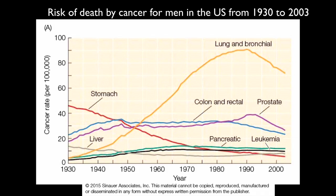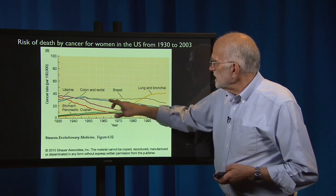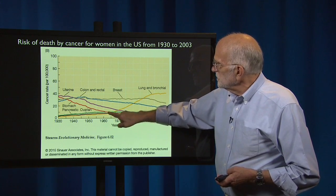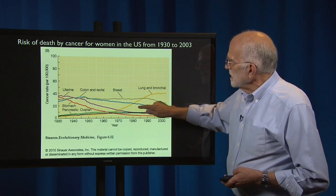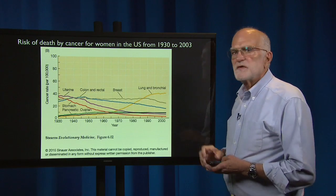Looking at risk of death by cancer from 1930 to 2003, in some cases there was considerable improvement — for example, the risk of death from stomach cancer in men has been going down. However, the risk of death from colon and rectal cancer, prostate cancer, pancreatic cancer, and leukemia has been pretty stable. The risk of death from lung cancer rose and then started to fall, tracking cigarette smoking. In women, the risk of death from colon and rectal cancer and stomach cancer has declined, but for ovarian cancer, breast cancer, and others, that risk is pretty stable. Women started being killed by smoking-related lung cancer a bit later than men, and have not yet benefited quite as much from stopping smoking.